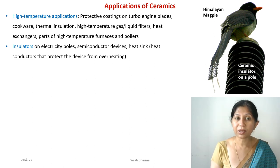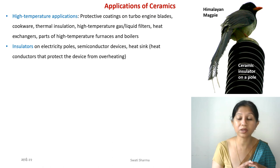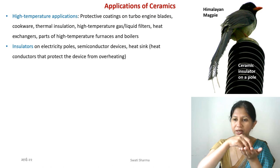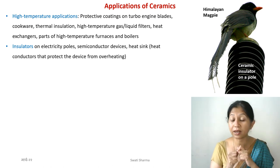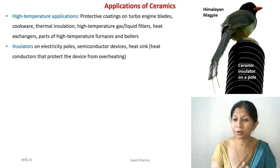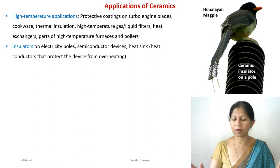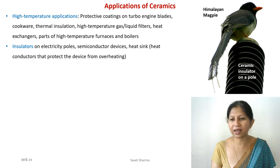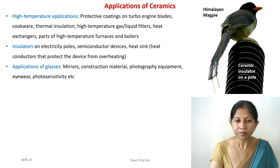In semiconductor devices, ceramics are also used as electrical insulations. They are also used as heat sinks — a heat sink distributes heat away from a device to prevent overheating. So if you have a device you don't want to overheat, you can put a panel of ceramic material to distribute the heat. That is the function of a heat sink.